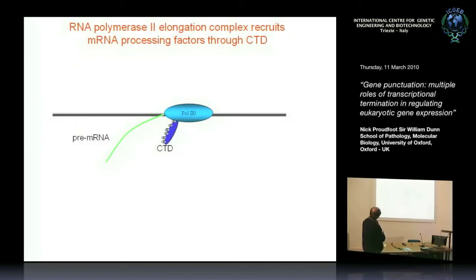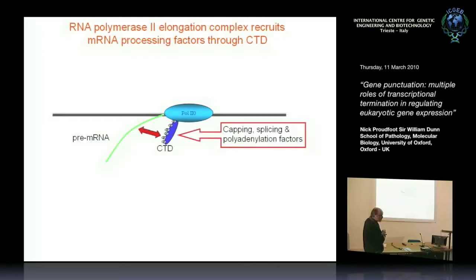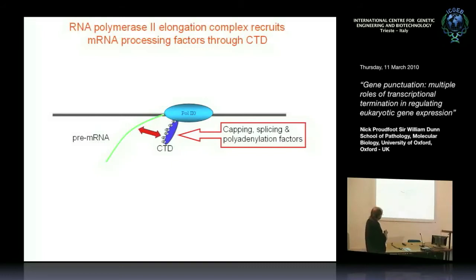RNA polymerase 2 is a very complex enzyme. It has a C-terminal domain on the largest subunit — the CTD — which is highly phosphorylated during transcription. The CTD recruits RNA processing factors that work on the transcript as it's being made. The concept in making a message from a eukaryotic gene is that the transcript, as it's being made, is modified — it's spliced, capped, and polyadenylated. The whole business of processing transcripts occurs co-transcriptionally; that's the key point.